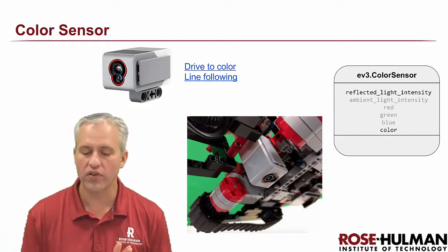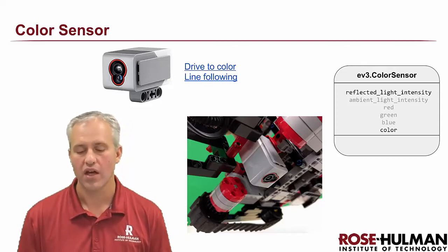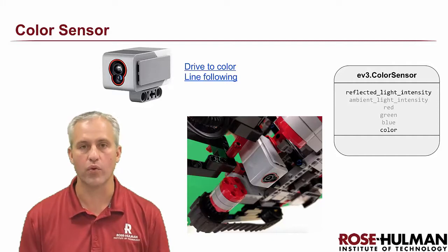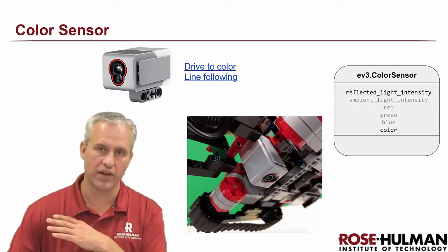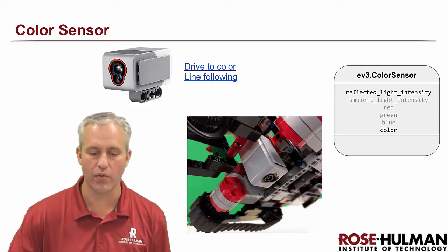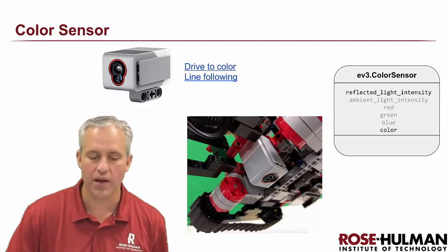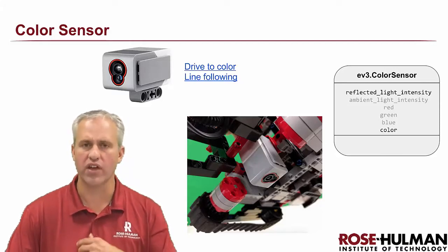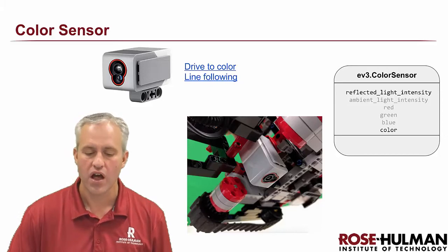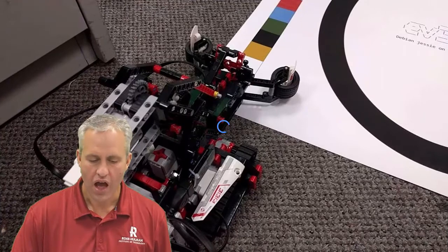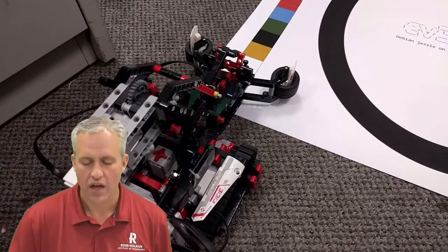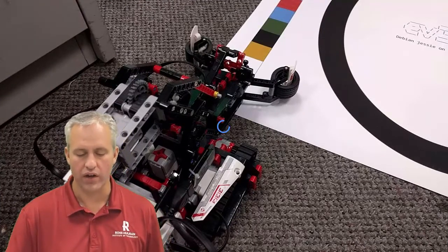I put the ones in black — reflected light intensity and color — that we're going to use. And then I put some of the ones in gray that we're not actually going to use. So there are two modules for the sensor. One is called drive to color. I think I've already got it up in this tab, and we'll just play this video really quickly and then explain what it does.